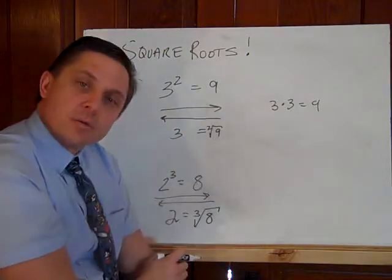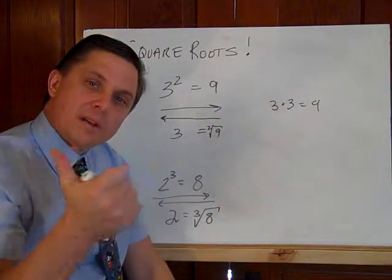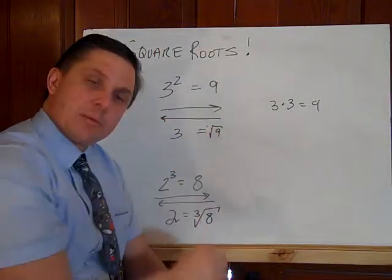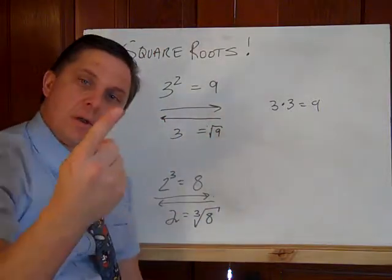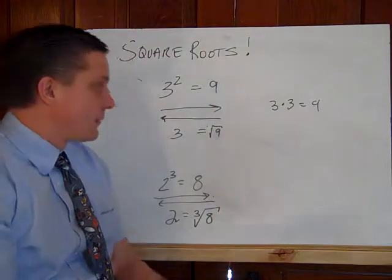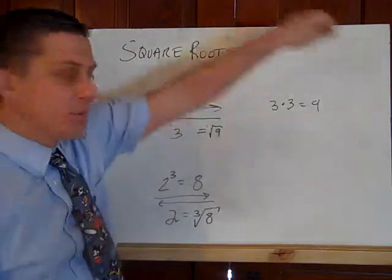There is an understood two on a square root, meaning what times what makes nine. Three times three makes nine. Down here, it's what times what times what makes eight. Square roots, something we're accustomed to.